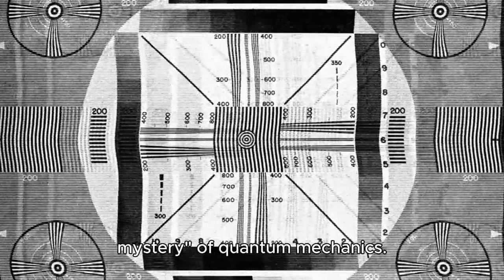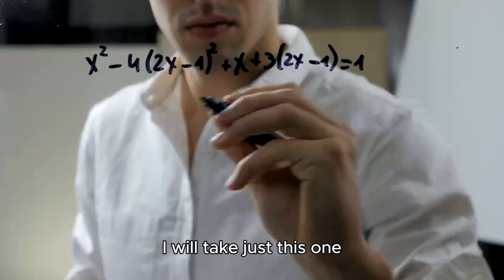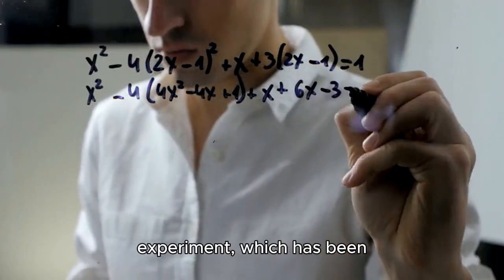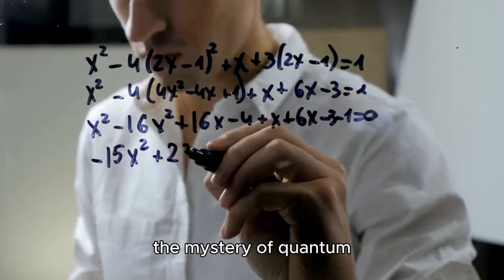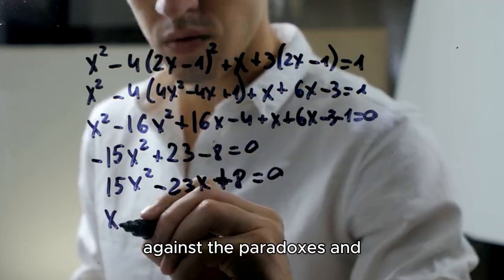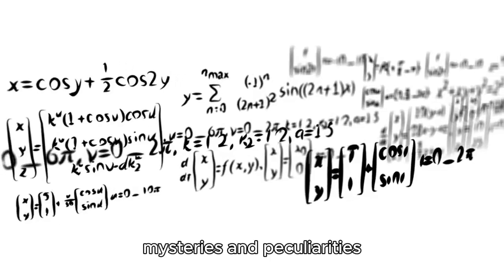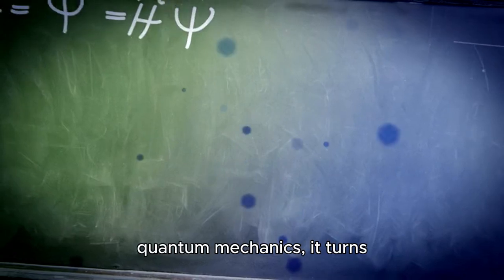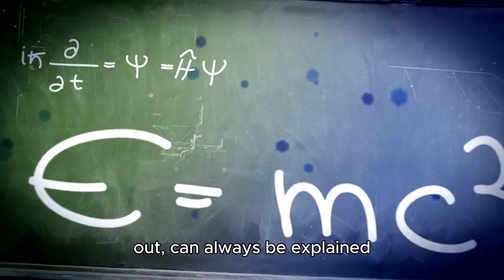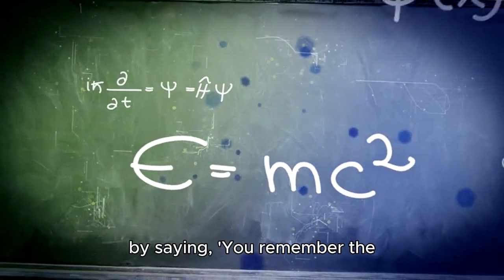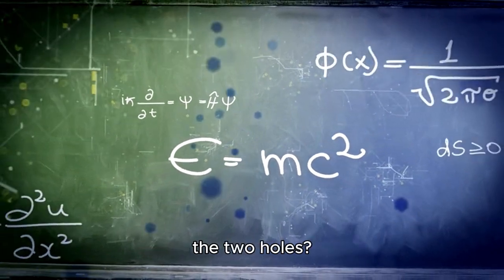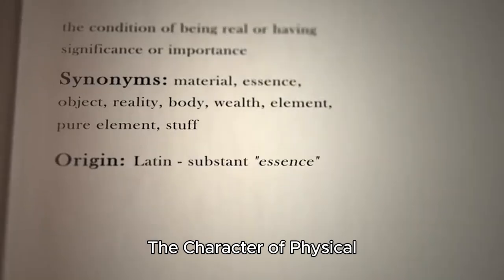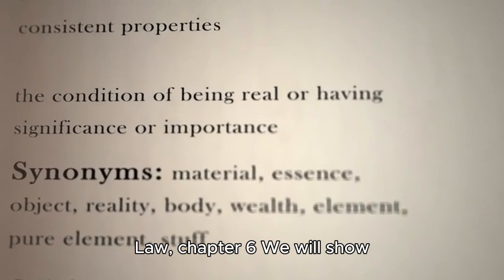Richard Feynman said that the two-slit experiment contains the one mystery of quantum mechanics. "I will take just this one experiment, which has been designed to contain all of the mystery of quantum mechanics, to put you up against the paradoxes and mysteries and peculiarities of nature 100%. Any other situation in quantum mechanics, it turns out, can always be explained by saying, 'You remember the case of the experiment with the two holes? It's the same thing.'" The Character of Physical Law, Chapter 6.